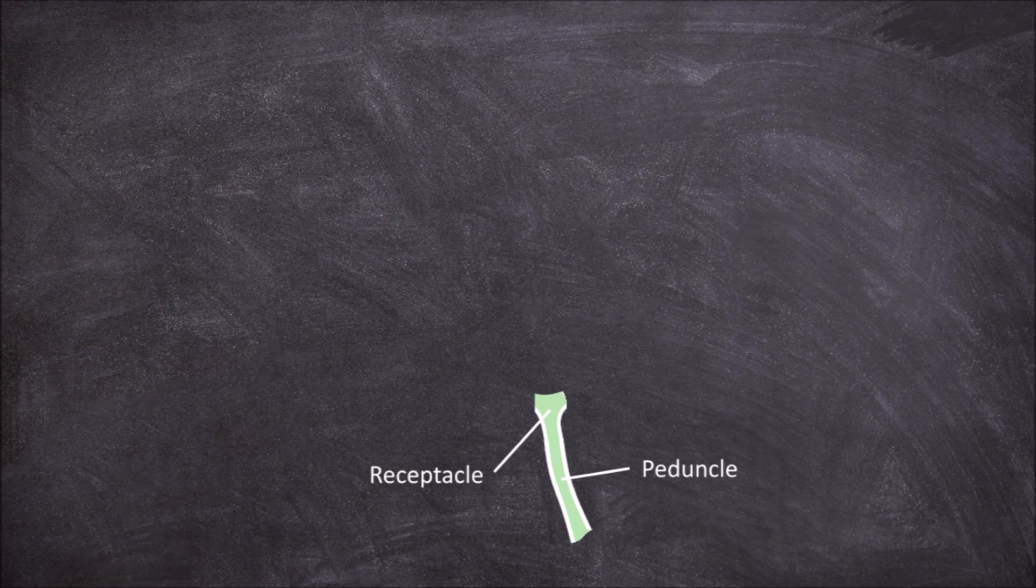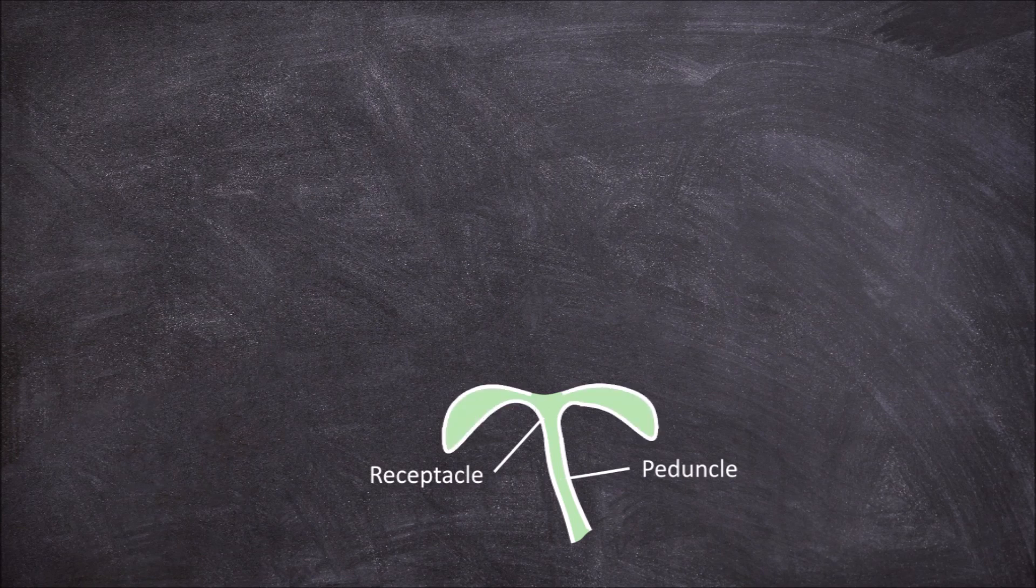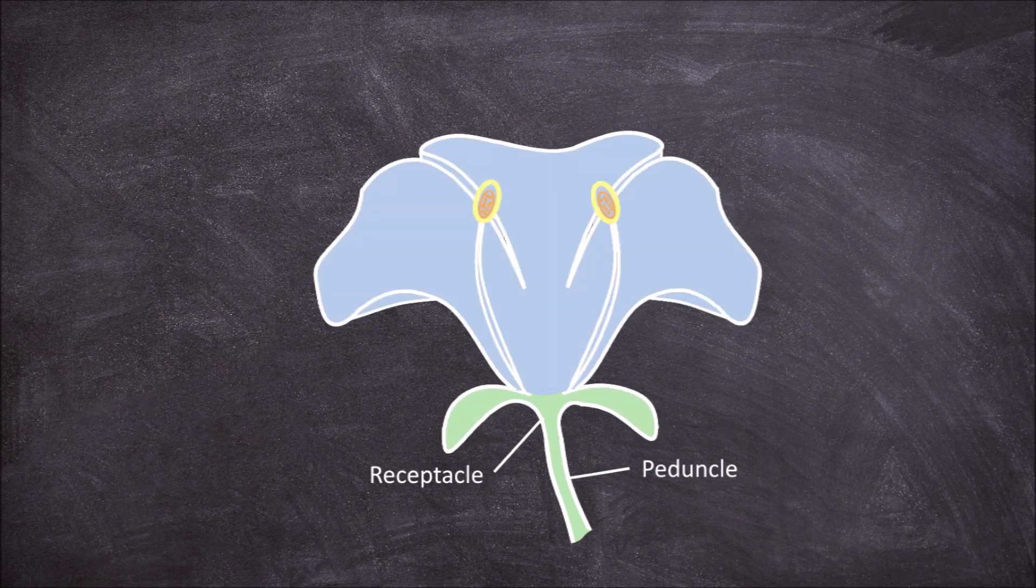Flowers are made up of four kinds of floral organs: the sepals, petals, stamens, and the carpals.